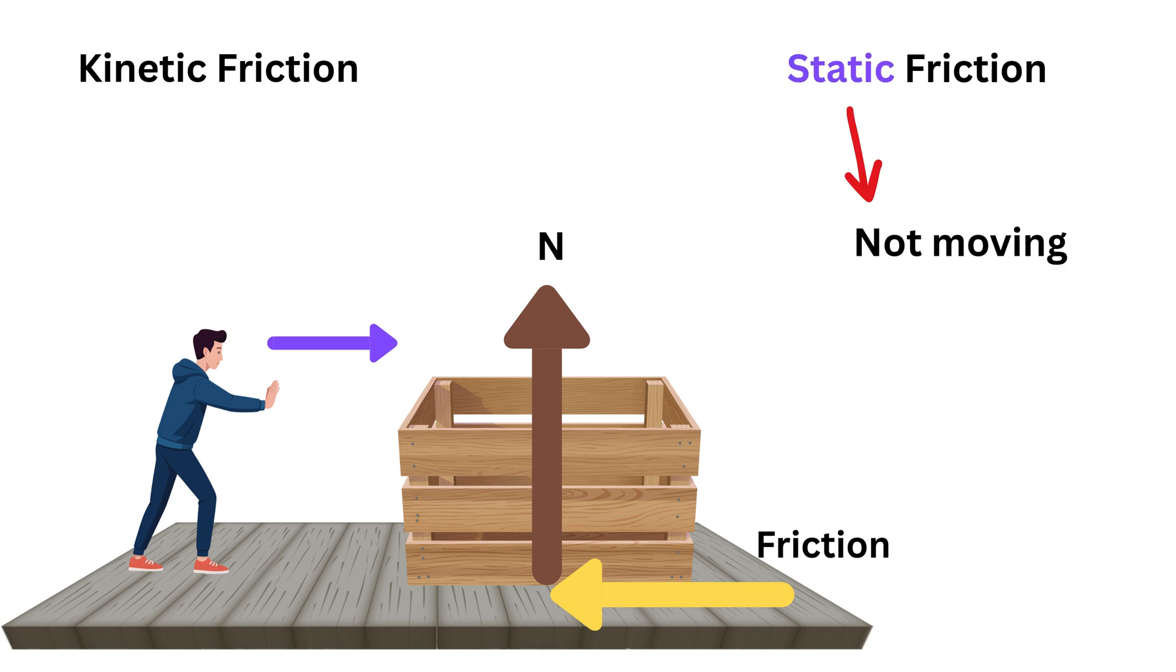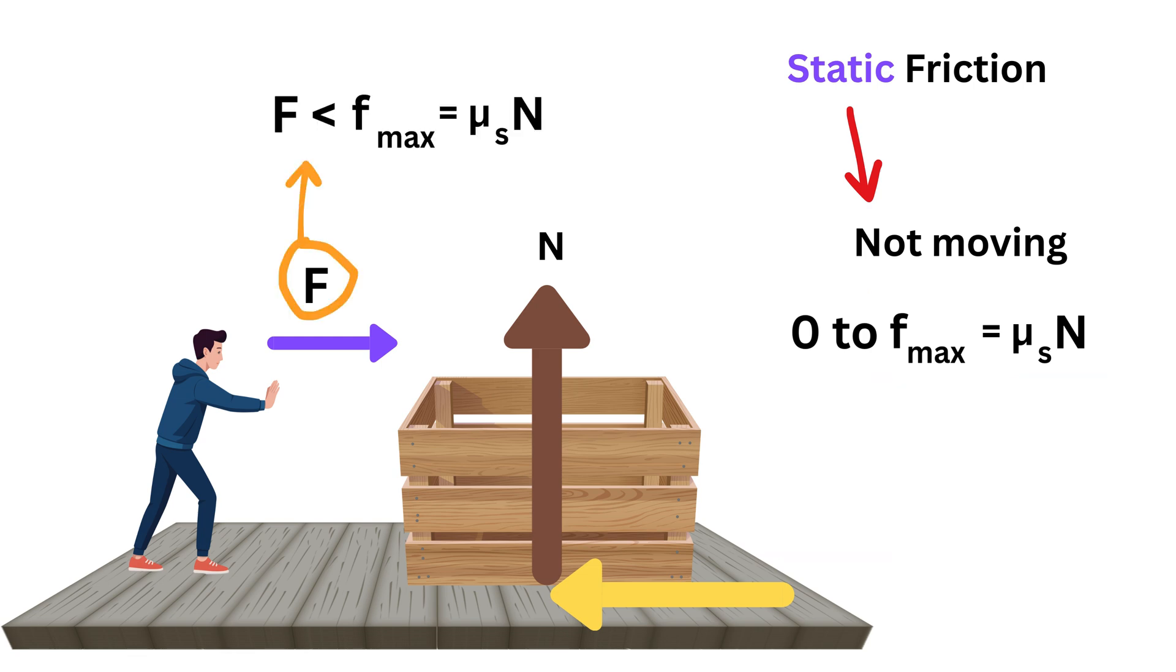Static friction happens when the object is not moving but you are trying to push or pull it. The object resists the push and the friction force adjusts itself so that the object does not move. This force can be anywhere from zero up to a maximum and the maximum is determined by multiplying the coefficient of static friction, a constant which we write as mu_s with the normal force n. If you push lightly, the static friction force f_s exactly matches your push or the applied force f so the box does not move.